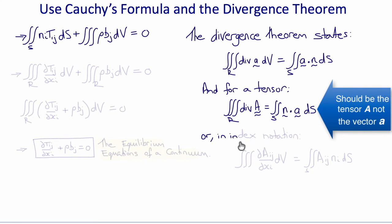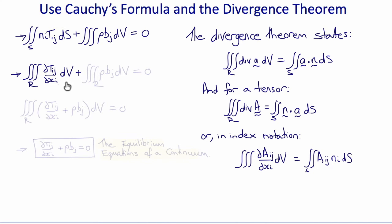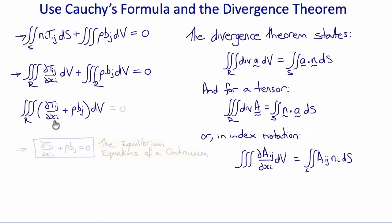Writing in tensor index notation, the volume integral of ∂Aij/∂xi with respect to V equals the surface integral of Aij Ni with respect to S. Applying this theorem, the surface integral of Ni Tij becomes the volume integral of ∂Tij/∂xi with respect to V. Combined with the unchanged body force term rho Bj dV, we have two volume integrals over the same region, giving a single integrand: ∂Tij/∂xi plus rho Bj with respect to V equals zero.